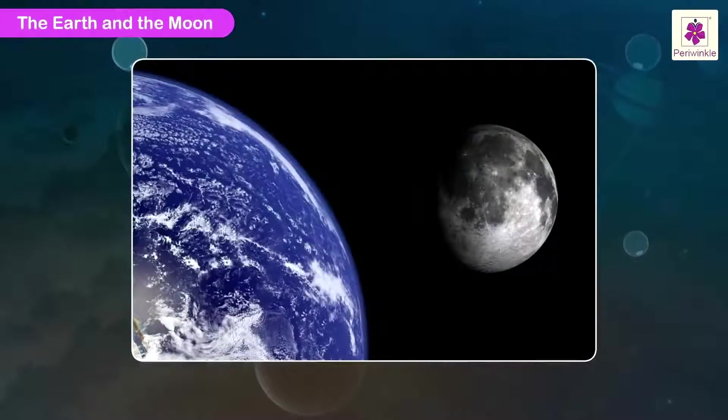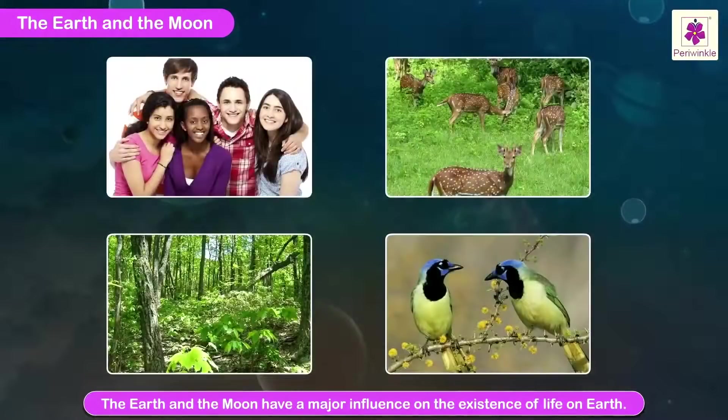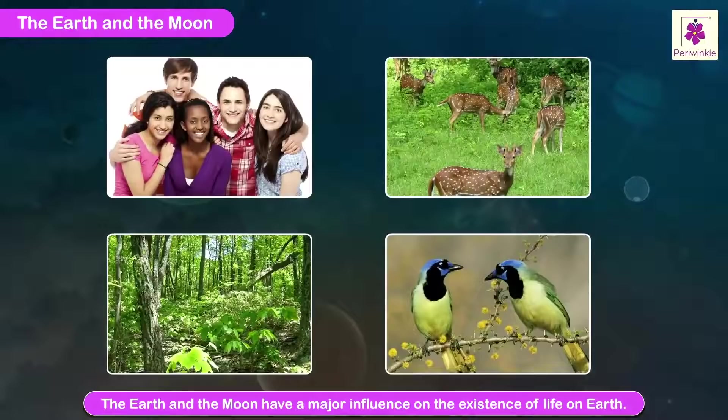The Earth and the Moon. The Earth and its only natural satellite, the Moon, have a major influence on the existence of life on Earth. Let us learn more about them.